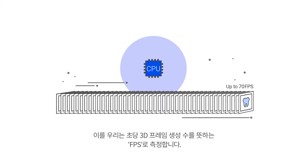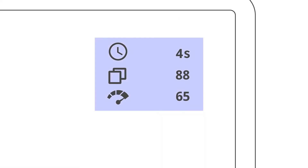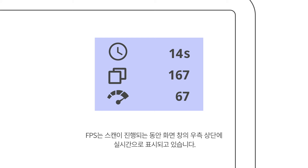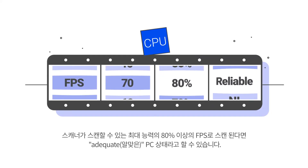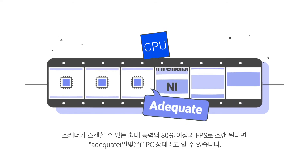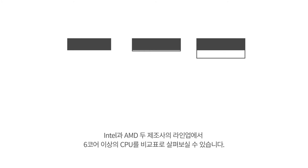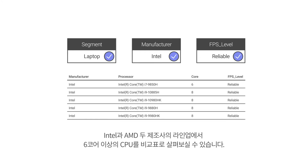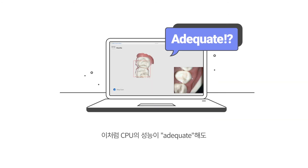We measure this with FPS, which shows how many 3D frames are being created per second. This is displayed in the upper right corner of the screen while scanning. If the scanner scans on a PC with an FPS of more than 80% of its maximum capacity, it is adequate. Adequate PCs have more than 6 cores in their processor. You can see a comparison table of processors with 6-plus cores from Intel and AMD's lineup.